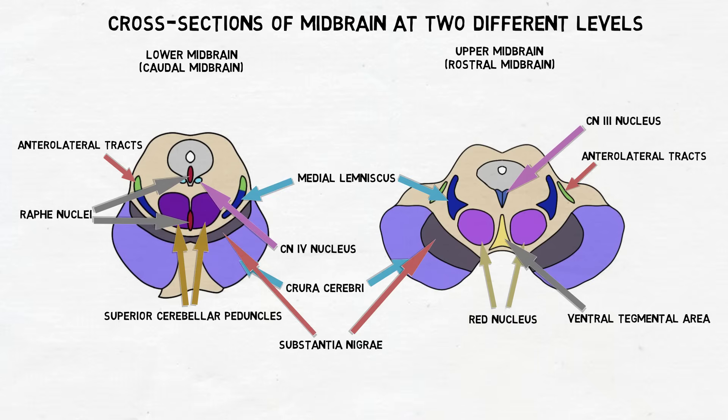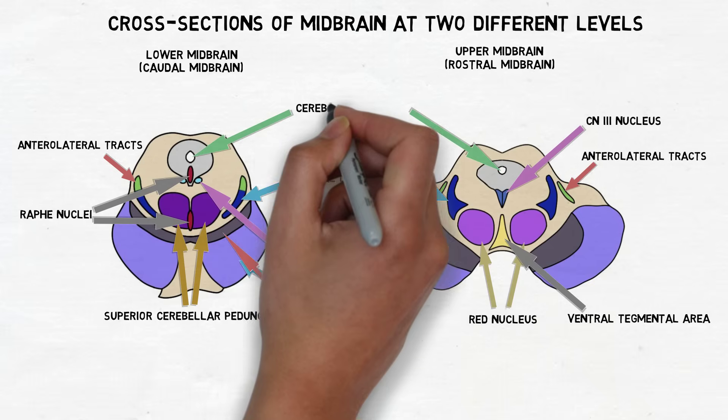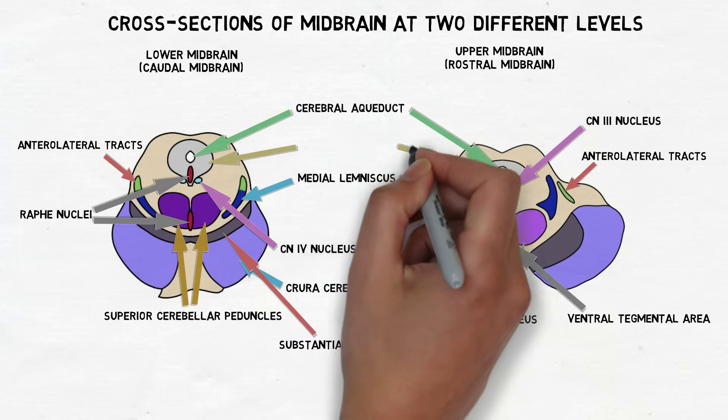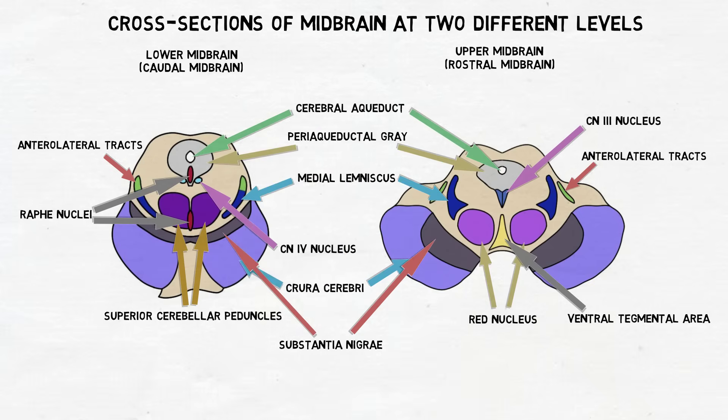Finally, the area surrounding the cerebral aqueduct is called the periaqueductal gray. The periaqueductal gray is known for its role in pain inhibition.